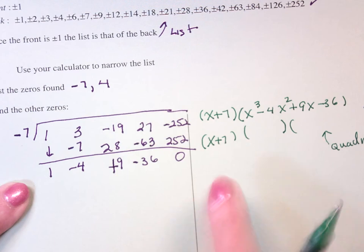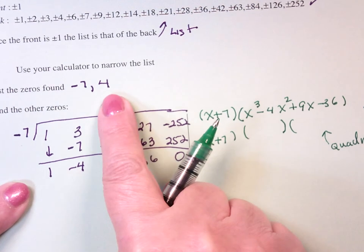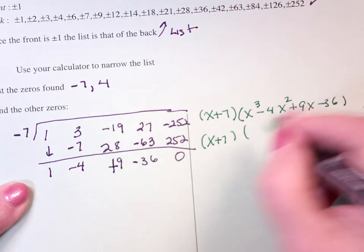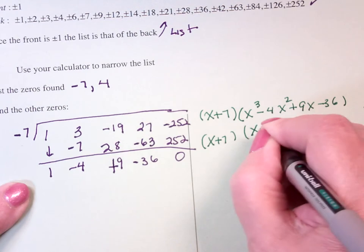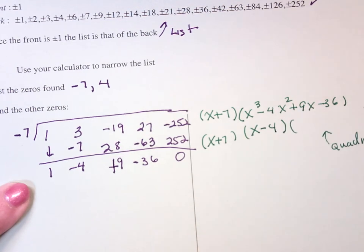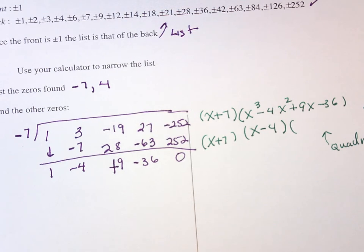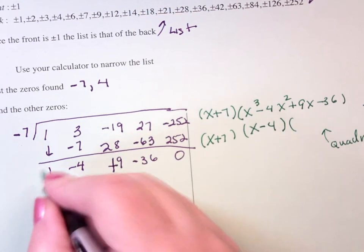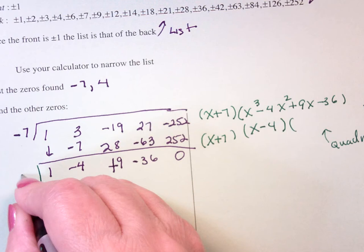So, the next factor, we know, the next zero is 4, so the factor I'm going to take out is X minus 4, because X plus 4, X equal 4 is a zero, X minus 4 is a factor. So, I'm going to divide this guy by 4.